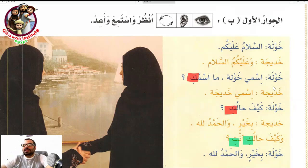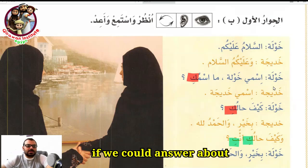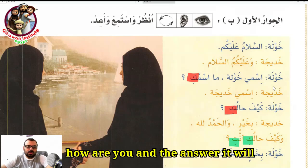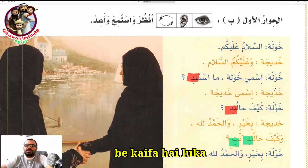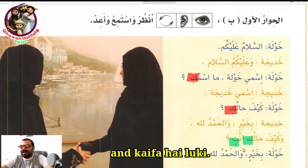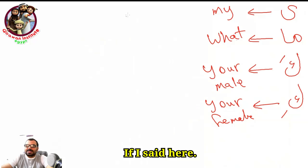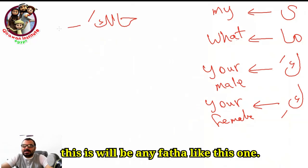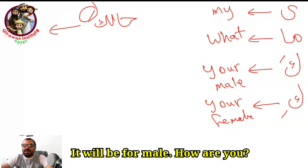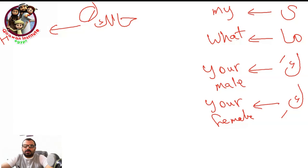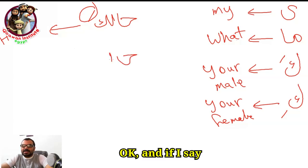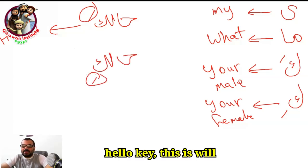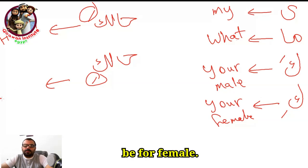From the previous lesson, we also covered how to say 'how are you' and the answer. It will be 'kaifa haluka' — with fatha at the end — for male. And 'kaifa haluki' — with kasra — for female.